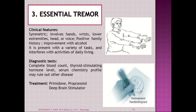Third type is essential tremor. It is the most commonly encountered tremor. It is symmetric, involves the hand, wrist, even the lower extremity, head, or voice. A positive family history is present. There is improvement with alcohol. It is present with a variety of daily tasks and activities, and it interferes with ADL activities. To diagnose, we need a complete CBC, thyroid stimulating hormone level, and serum chemistry profile to rule out other diseases. Treatment will be primidone, propranolol, or deep brain stimulation.